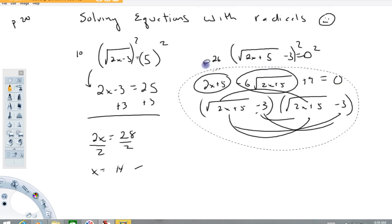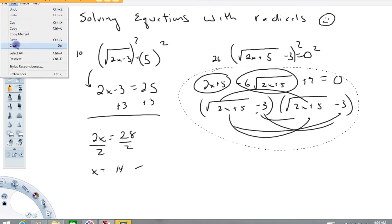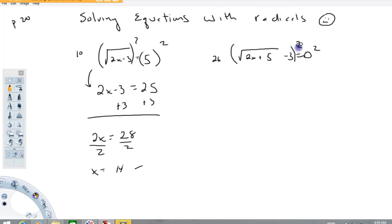So what we're going to do instead of squaring it right now is we're going to add that 3 to the other side first. This now will work when we square both sides. You always want to isolate the radical before you square both sides otherwise the radical won't be gone after you square it.